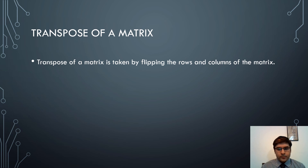Next we shall see what is meant by transpose of a matrix. Transpose is taken by flipping the rows and columns of a matrix. For example, if we have a matrix with rows [1, 2] and [3, 4], then its transpose, written with superscript T, will have rows [1, 3] and [2, 4]. The first row becomes the first column, and the second row becomes the second column.